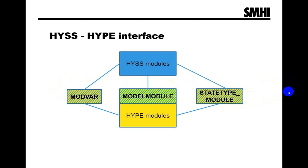The module Modvar holds global variables and arrays that HYS makes available to the model programmer, for instance input data of precipitation and temperature. The StateTypeModule contains type declarations for state variables. The ModelModule contains the subroutines that the model needs to provide to HYS, for instance the subroutine model that does all the hydrological process calculations.